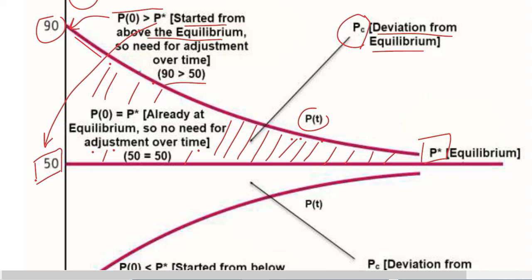The second possibility is when the initial price is at equilibrium — that is, the movement remains on this path. Since we have already started from the equilibrium point, there is no need for adjustment over time. The initial price is 50 and the equilibrium is also 50, so adjustments are not needed. The deviation in this case is equal to zero, which is a very good thing, because the time path is at equilibrium — there is no complementary function, no deviation, and we are at the cherished point of equilibrium.